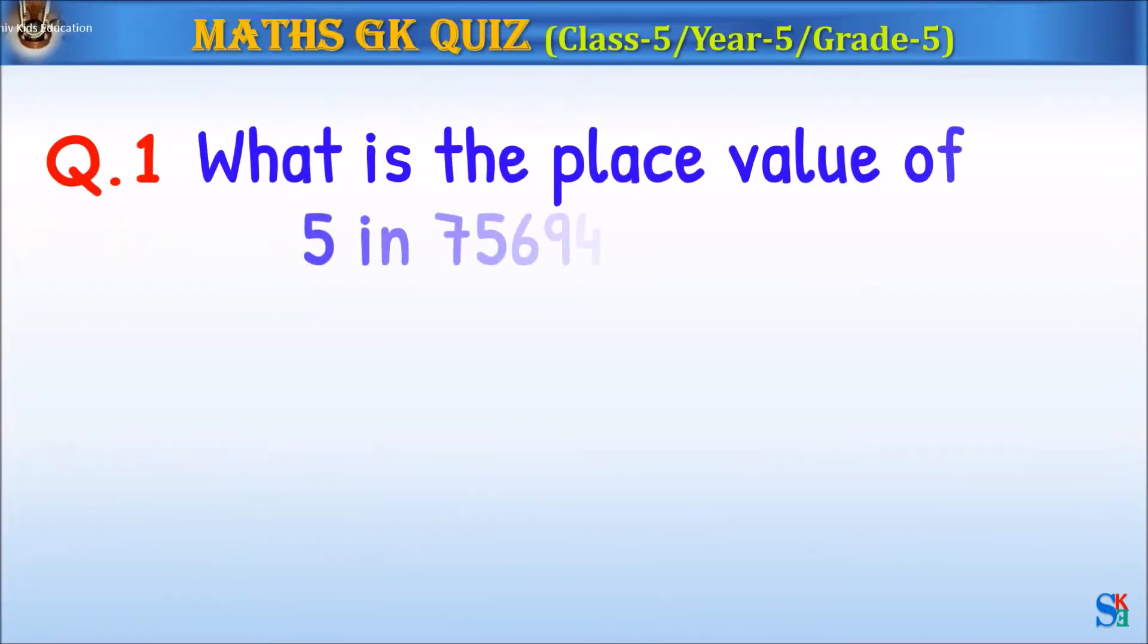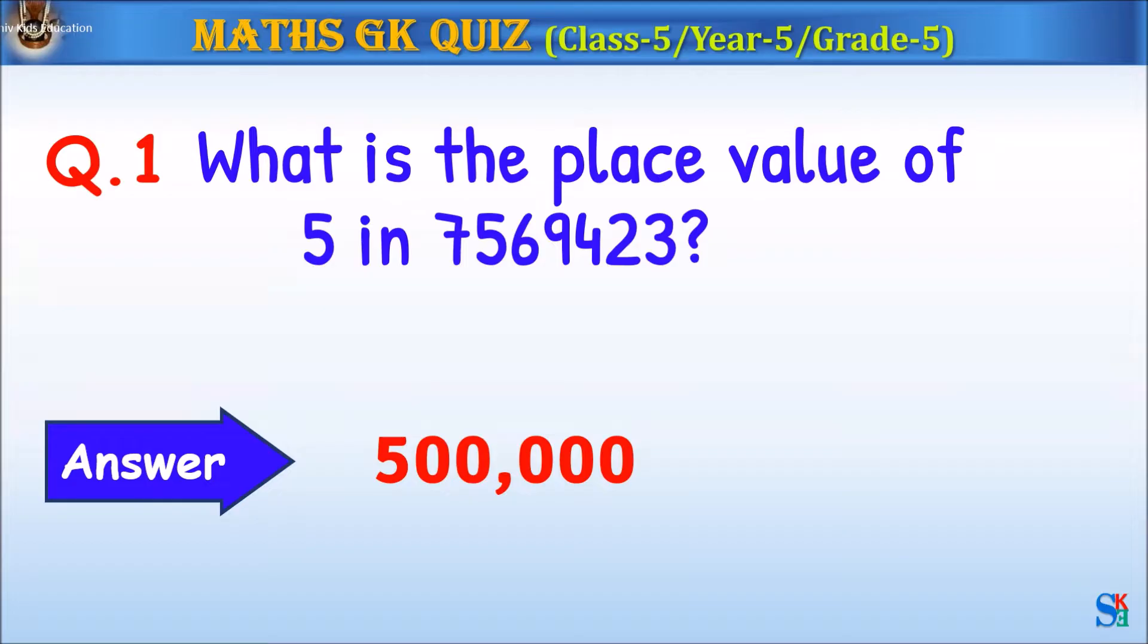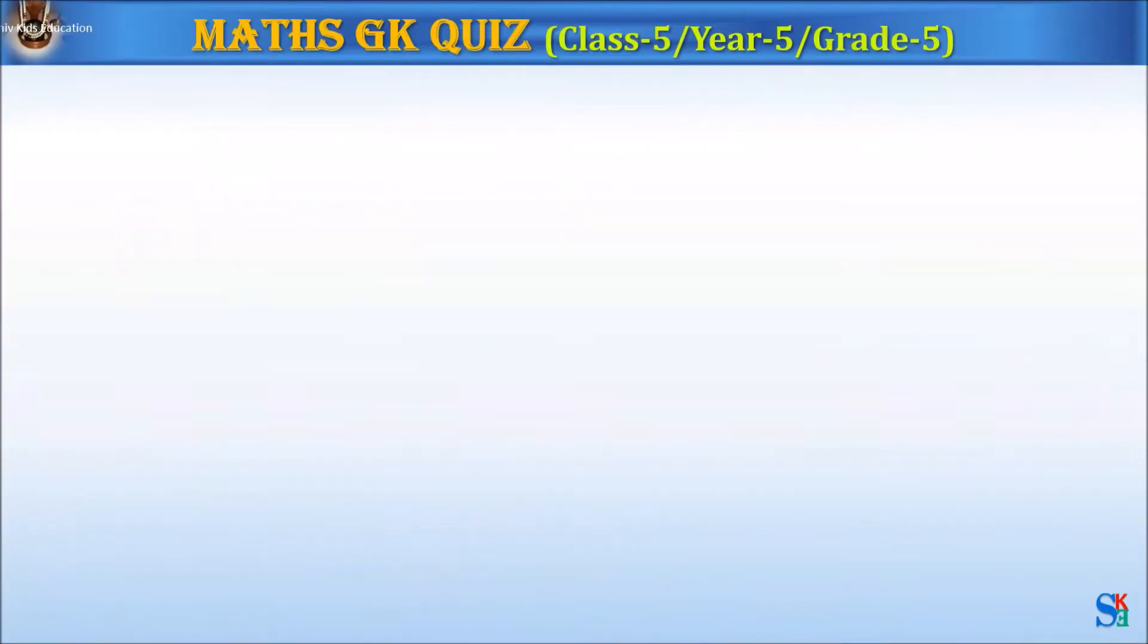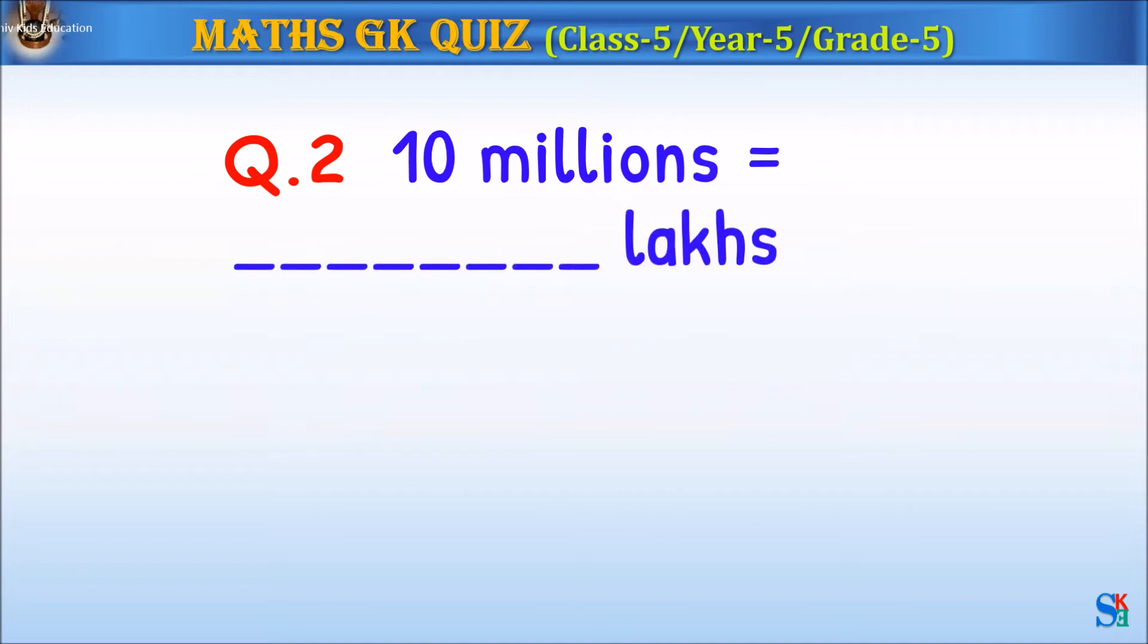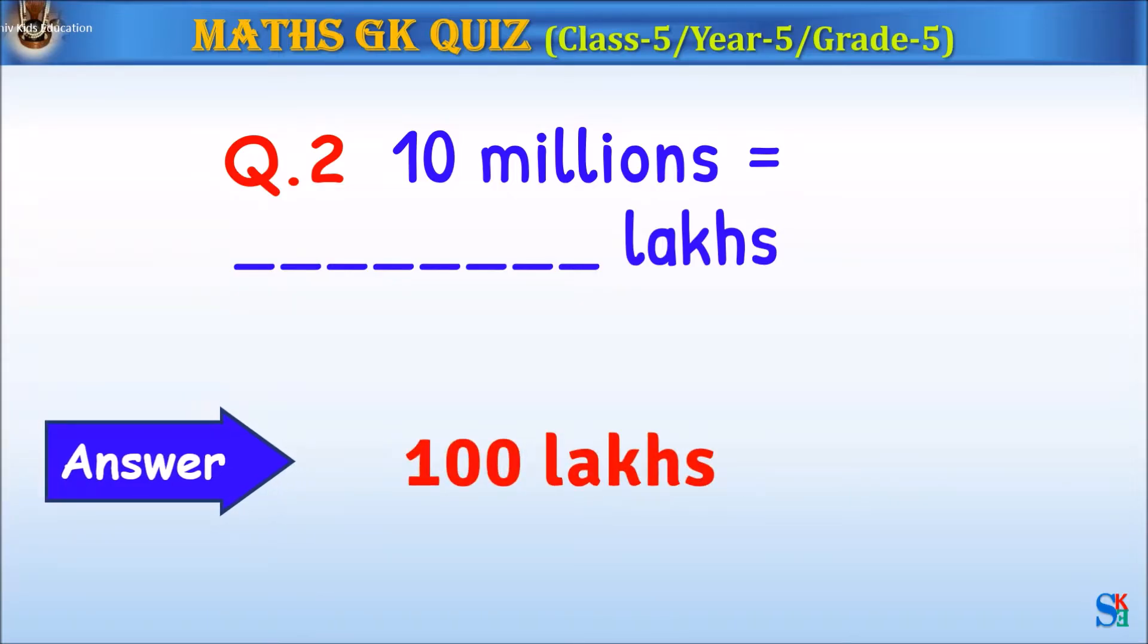Question 1: What is the place value of 5 in the given number? The answer is 500,000. Question 2: 10,000,000 equals how many lakh? The answer is 100 lakh.